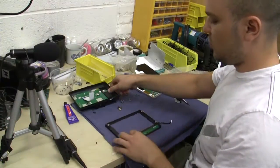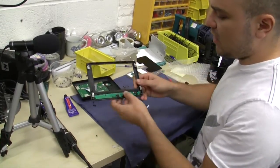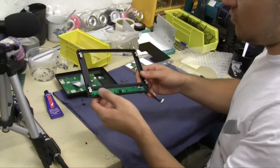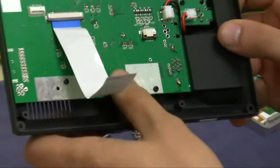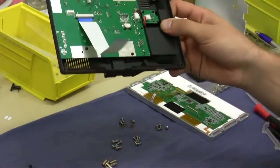The next thing I'm going to do is take the button panel out from the frame. There are six screws on that. And I'm going to take the PCB board out of the bezel as well.